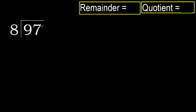97 divided by 8. 9 is not less, therefore with 9 — 8 multiplied by which number is nearest to 9 but not greater?